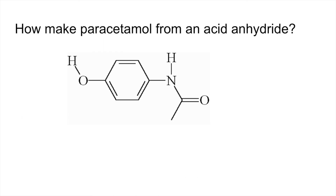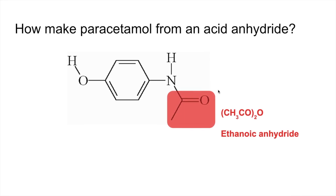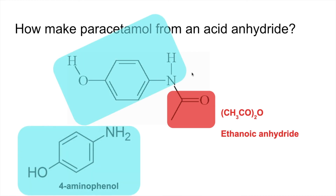Finally, an example of making an amide from an acid anhydride — I've gone for paracetamol. The acid anhydride gives us the acyl part, so that comes from ethanoic anhydride. The amine part comes from 4-aminophenol.